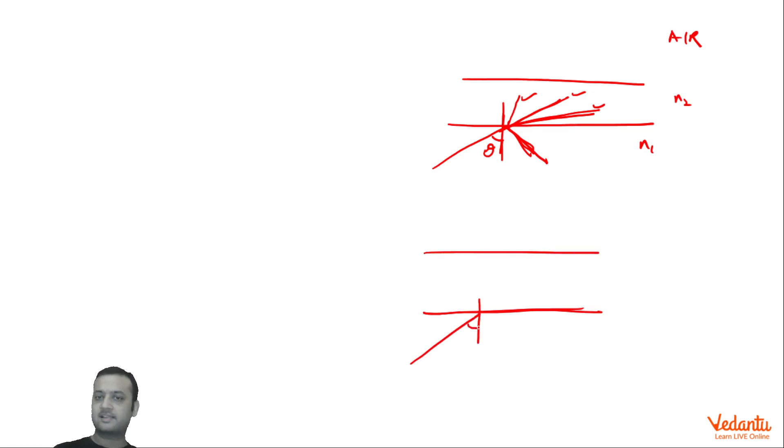Now if this angle is theta, so whatever is this angle R - R could be greater than theta, less than theta, or equal to theta - then this angle will also be R. Now let's say this angle is E. I am assuming the ray went into air. If the ray went into air, that means angle E exists here. The angle of emergence will exist.